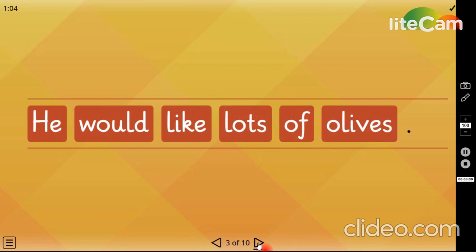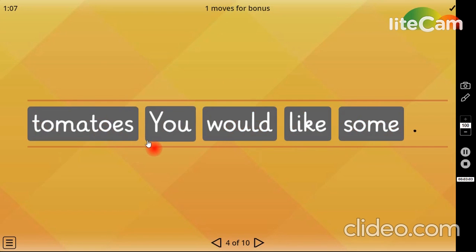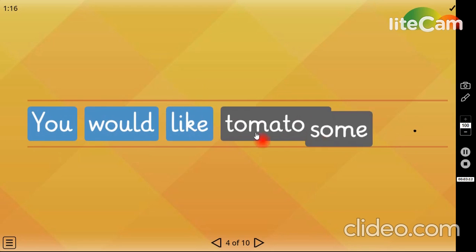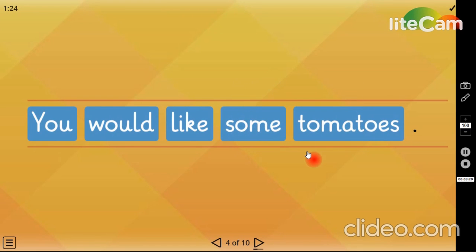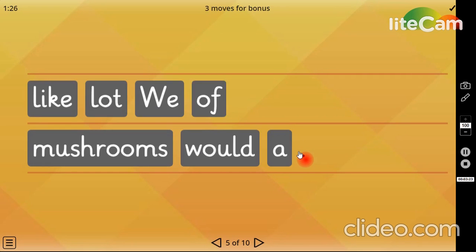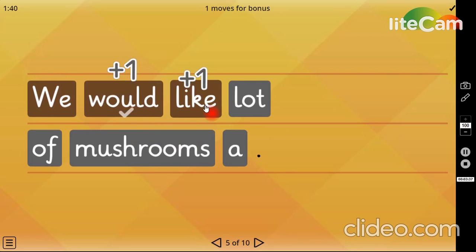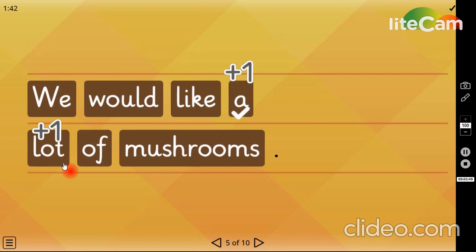Now four, here we have tomatoes. You would like, and some, you would like some tomatoes. Yes, you would like some tomatoes, because the letter Y is the capital letter. Now here we will begin with the capital letter. We got like a lot of. Perfect.